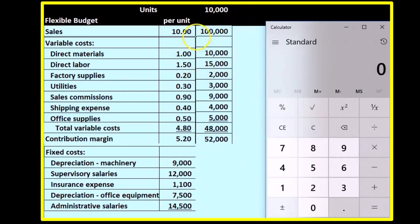The $1 times 10,000 gives us $10,000, the $1.50 times 10,000 gives us $15,000, the $0.20 times 10,000 gives us $2,000, and the $0.30 times 10,000 gives us $3,000.